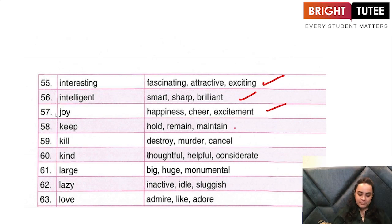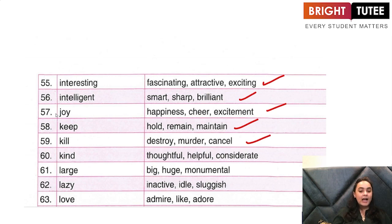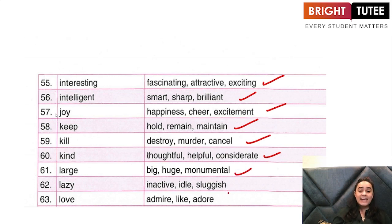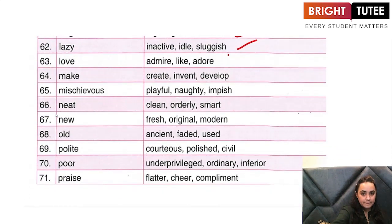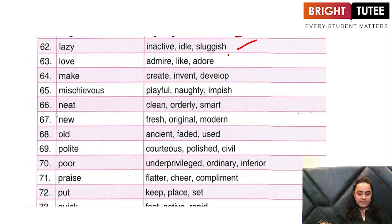'Keep' — is to hold something, to maintain something, something that remains. 'Kill' — is to destroy, to murder, to cancel. 'Kind' — is thoughtful, helpful, considerate. 'Large' — is big, huge, or monumental. 'Lazy' — the synonyms for lazy: inactive, idle, or sluggish. 'Love' — is admire, like, adore.